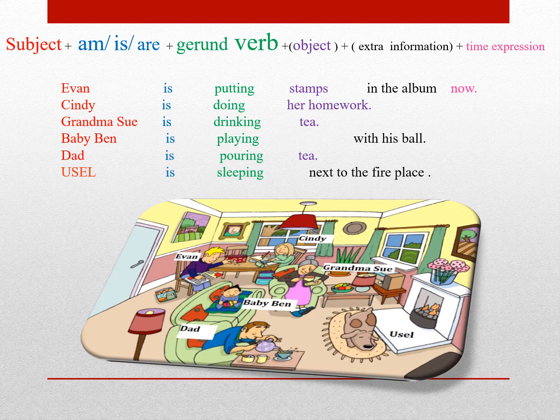برای مثال: ایوان همین الان داره تمبرها رو توی آلبوم میذاره. سیندی داره مشقش رو مینویسه. گراند ماسو داره چایی میخوره. Baby Ben داره با توپش بازی میکنه. پدر داره چایی میریزه. You sell کنار شومینه خوابیده. تمام این معنی ها رو شما با Present Continuous میگید و مفهوم رو کامل و درست به شنونده القا میکنید.